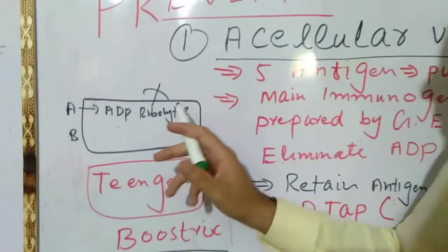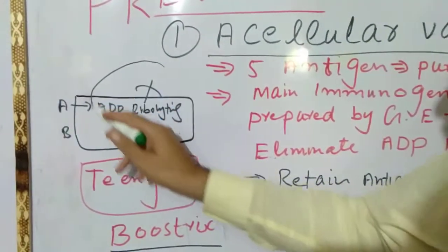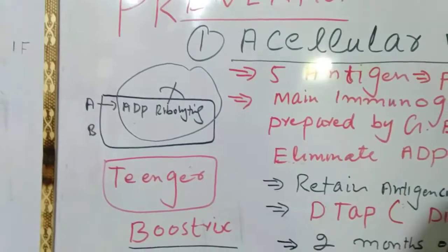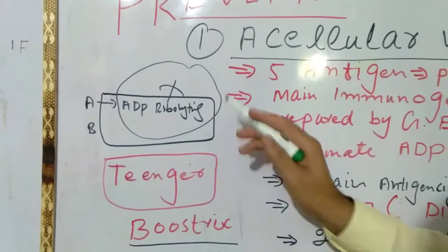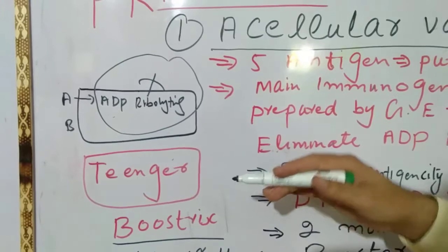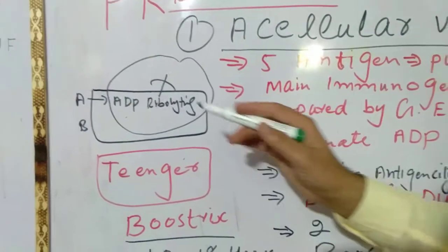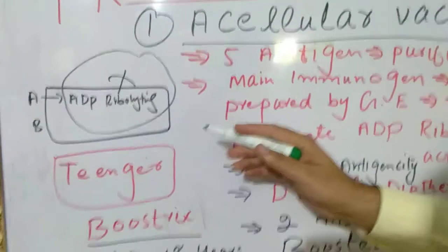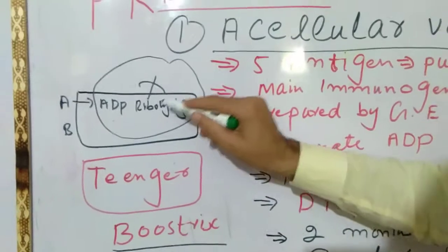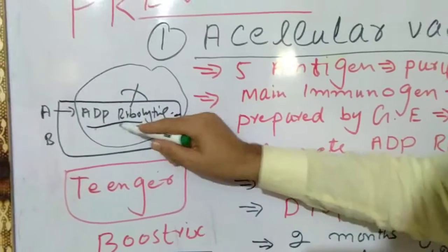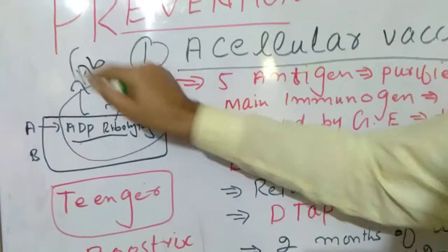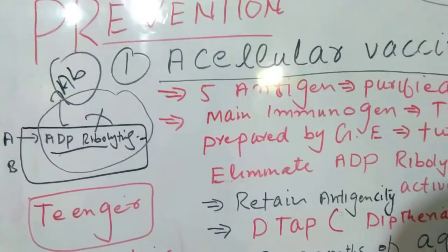To prepare the vaccine, the ADP-ribosylating unit is removed from the toxin. This means the modified toxin is still immunogenic — it will produce antibodies — but there will be no disease, because the pathogenic component has been eliminated.